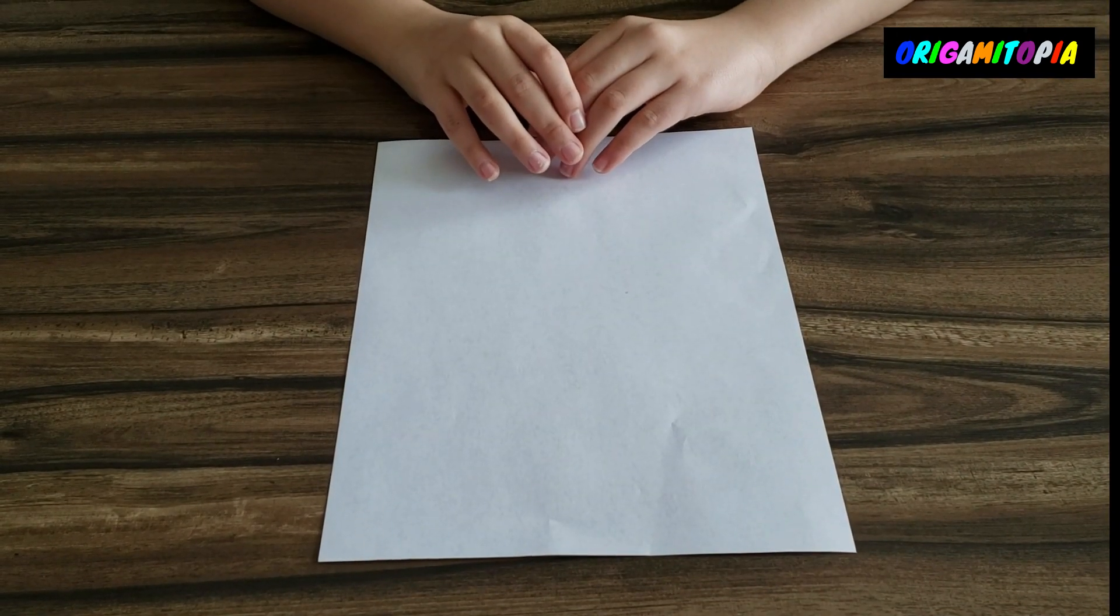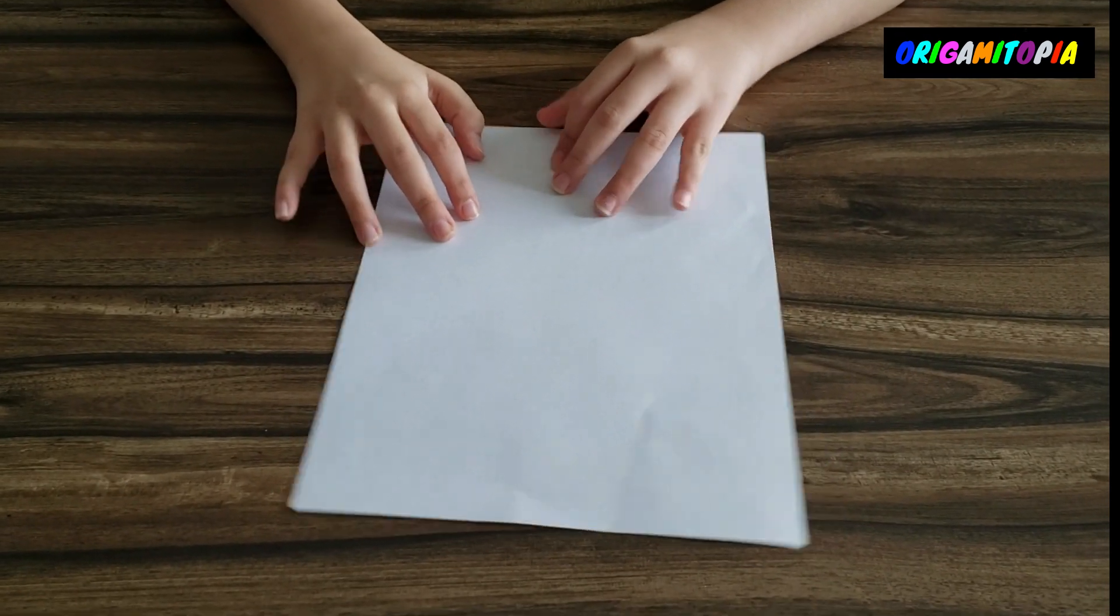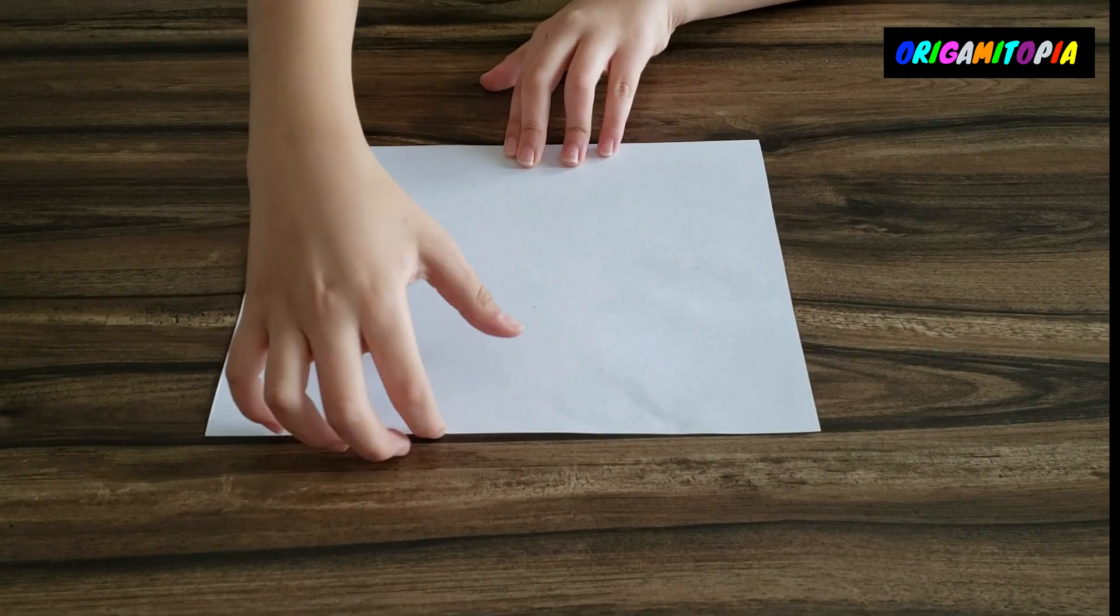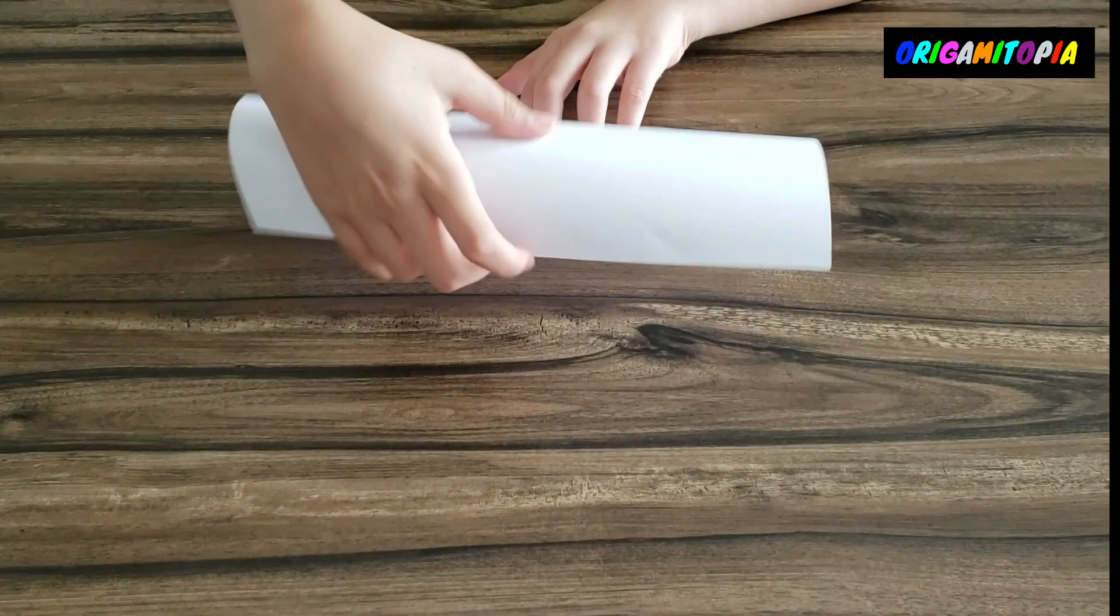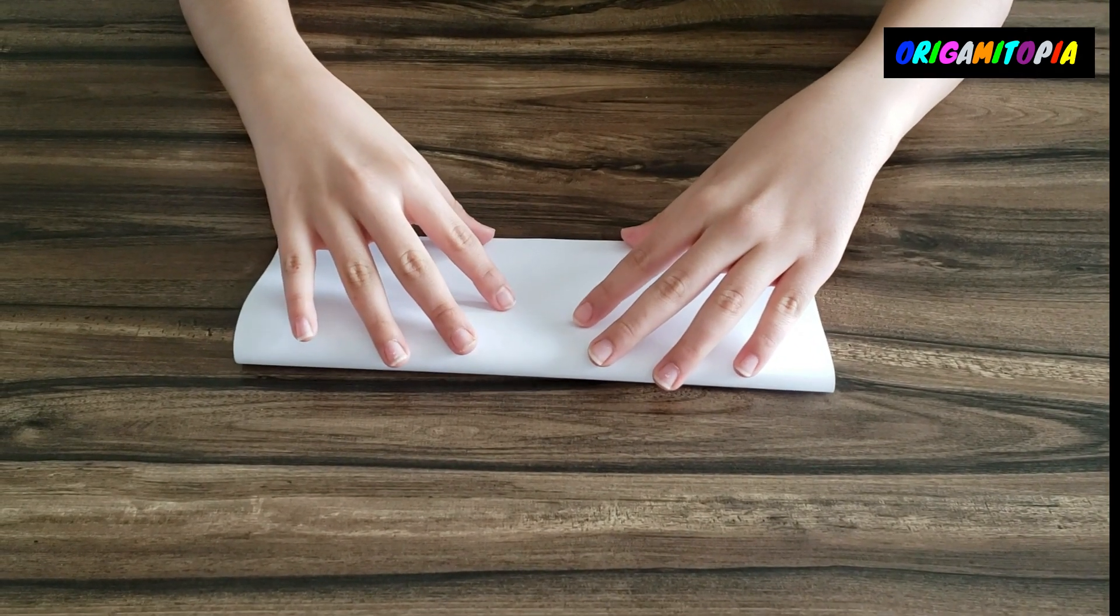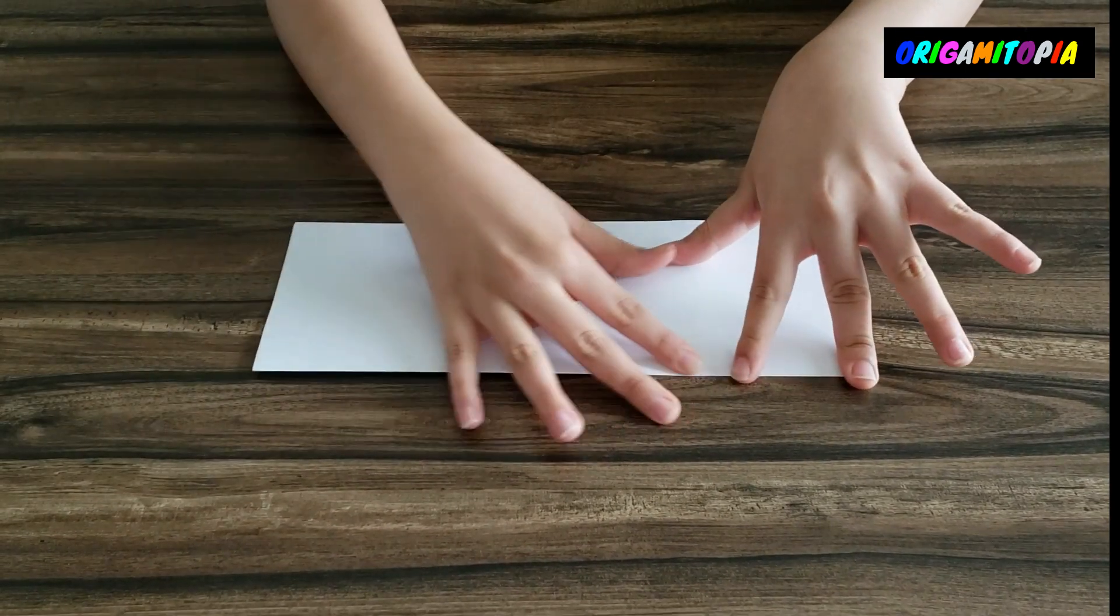All right, so for this model you're going to just need a sheet of printer paper. The first step is hold the paper like this horizontally and take this top edge and fold it down to the bottom edge. Align the edges as best as possible and then just give it a good sharp crease.